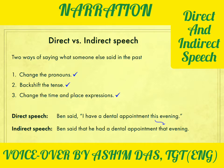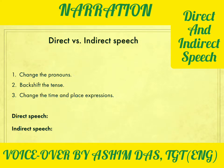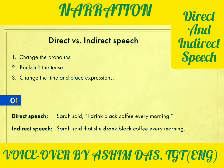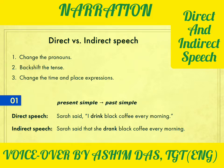Now let's see some examples. The first one: Sarah said, 'I drink black coffee every morning.' The indirect speech sentence is: Sarah said that she drank black coffee every morning. 'I' becomes 'she' — that's step one, change the pronouns. 'Drink,' which is present simple tense, becomes 'drank,' which is past simple — that's step two, backshift the tense. There are no time or place expressions here, so we don't need step three.